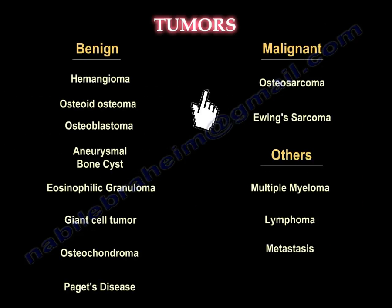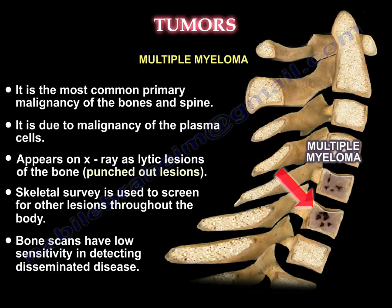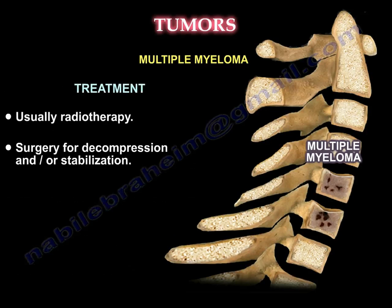Multiple myeloma is the most common primary malignancy of the bones and the spine. It is due to malignancy of plasma cells and appears on X-rays as elliptic lesions of the bone — sometimes called punched-out lesions. The skeletal survey is used to screen for other lesions throughout the body. Bone scan shows low sensitivity, identifying only about 30–35% of cases. Treatment is usually radiotherapy and surgery for decompression and/or stabilization of the spine.